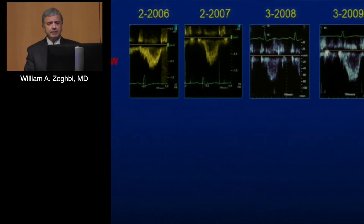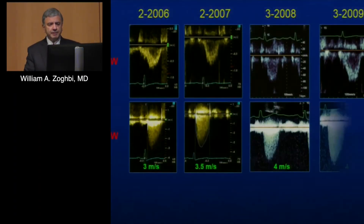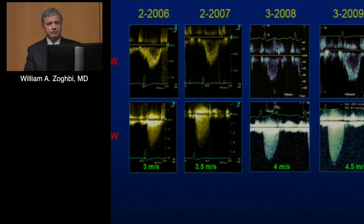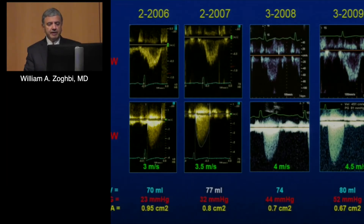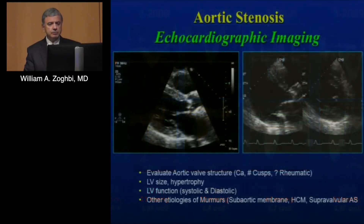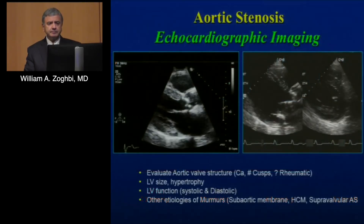As an example: a patient followed from 2006 showed progression within three years — velocity increased from 3 to 4.5 m/s, valve area gradually went down, the patient started to get symptomatic, and obviously you intervene.